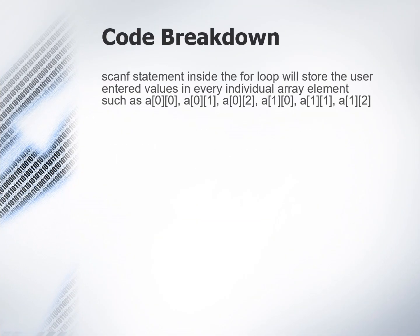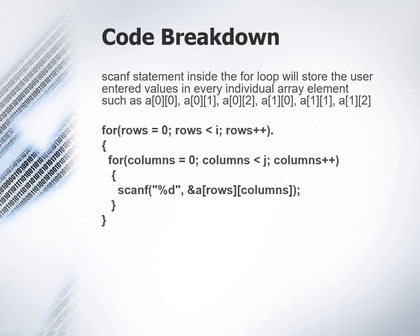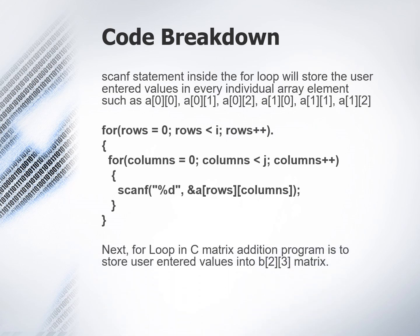The scanf statement inside the for loop will store the user entered values in every individual array element such as A[0][0], A[0][1], A[0][2], A[1][0], A[1][1], and A[1][2]. Here's the nested for loop that contains rows and columns as loop variables and the scanf statement: percentage d and A rows column. The next for loop in the matrix addition program is to store the user entered values in the B 2 by 3 matrix.